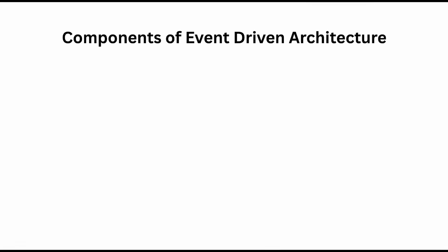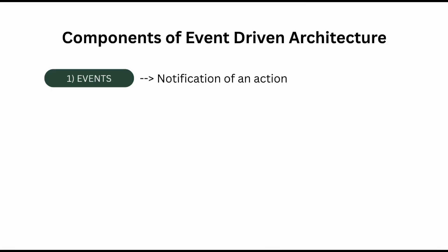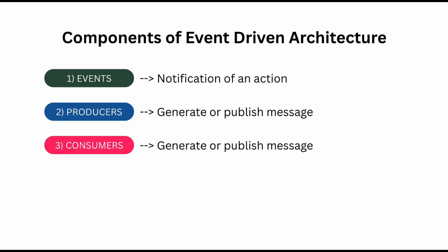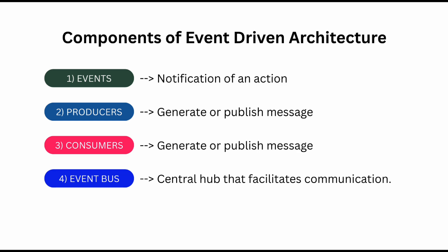Let's break down the key components of event-driven architecture. First, Events — these are notifications that something has happened. Examples include a user registered, an order was placed, a payment was processed. Second, Producers — the components or services that generate and publish events to the event bus. Third, Consumers — the components or services that subscribe to events and process them. Fourth, the Event Bus — the central hub that facilitates communication between producers and consumers. Examples include Apache Kafka or RabbitMQ.